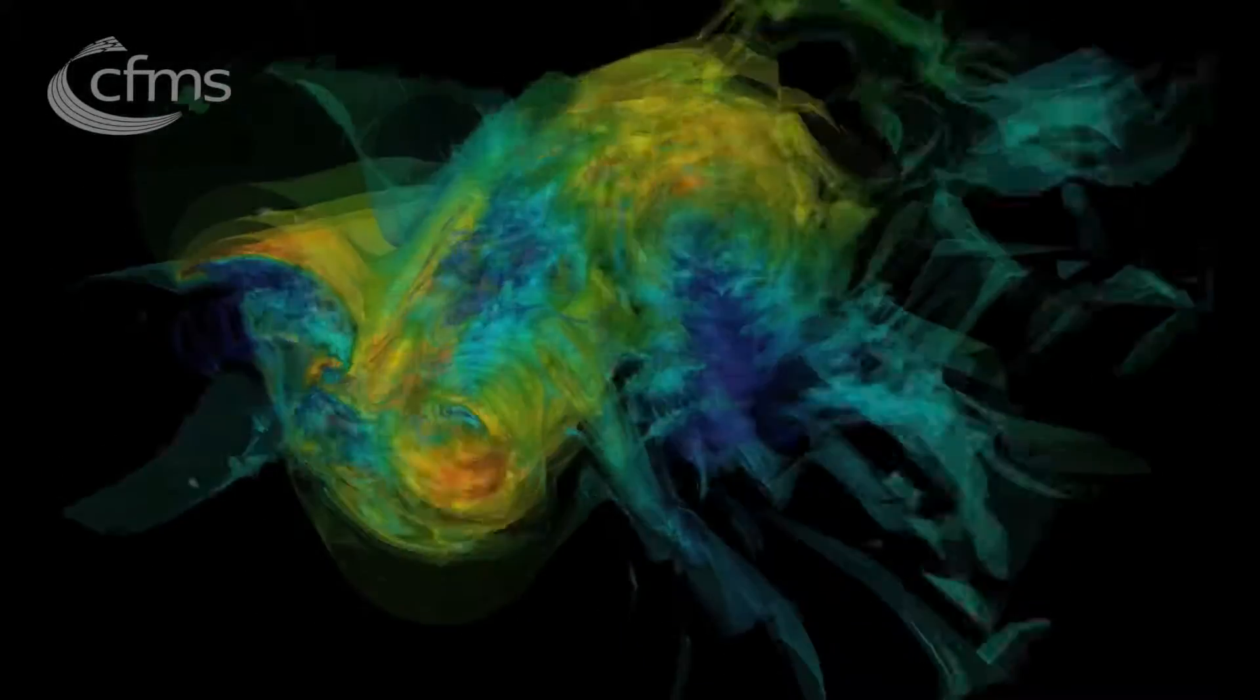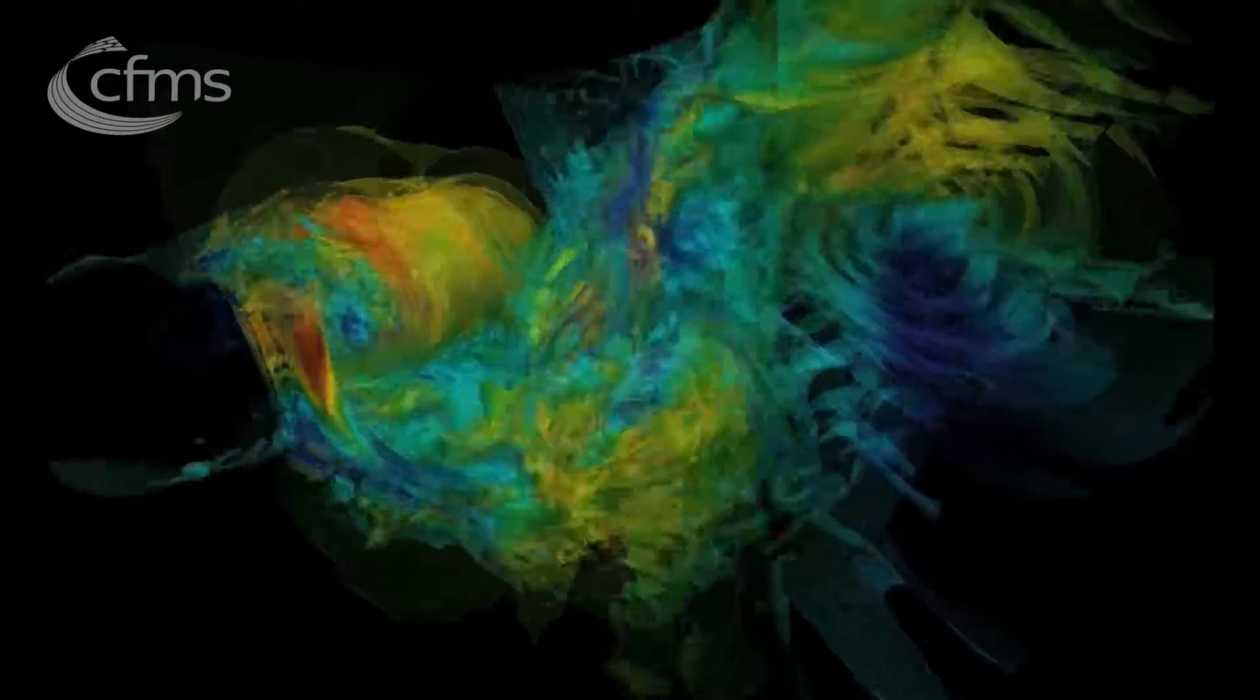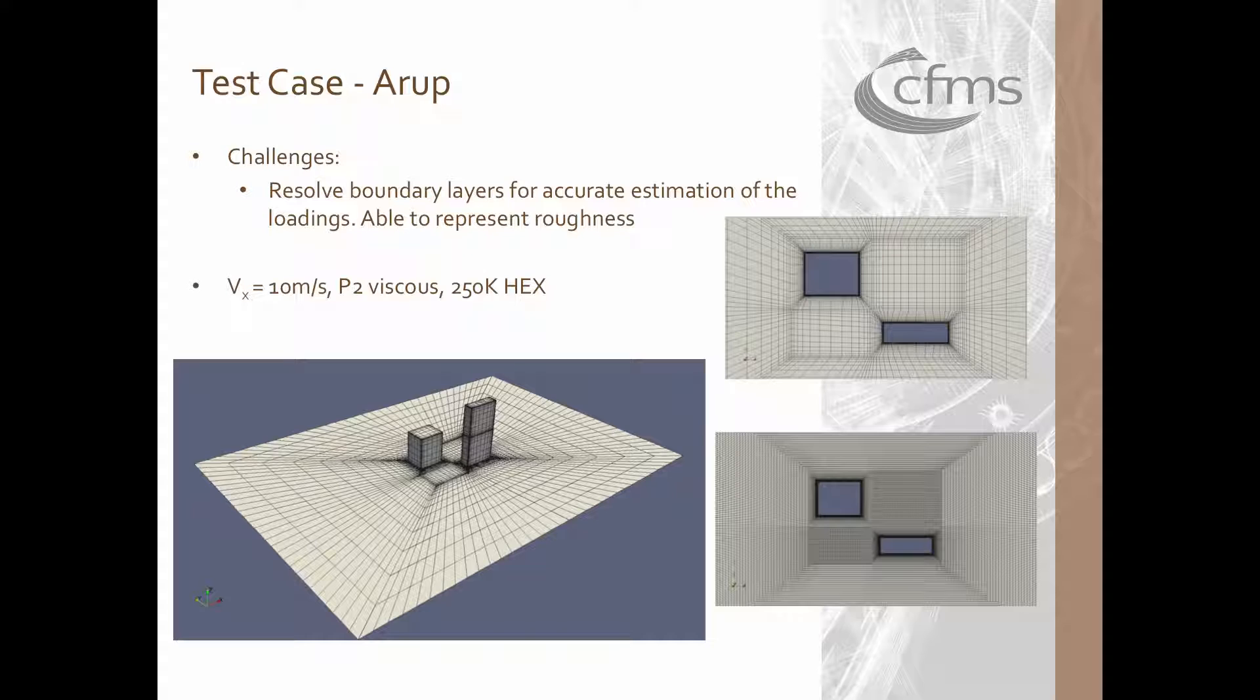In order to capture this, high fidelity simulations are required. The civil sector has been attracted in the past years by the ability of CFD to better design buildings. In this test case the flow around two buildings, considering the flow only in the horizontal direction, using a P2 hex mesh at 10 meters per second is computed.